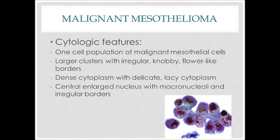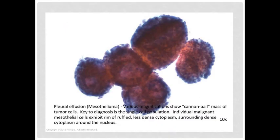Now let's look at their cytomorphology. Malignant mesothelial cells usually have one cell population — large clusters of malignant mesothelial cells. The clusters have an irregular, knobby surface and flower-like borders. The cytoplasm is dense with a lacy appearance. The nucleus of malignant mesothelial cells are enlarged centrally, with macronucleoli and irregular borders. Here is the image of malignant pleural effusion showing single cell population, flower-like borders, large nucleus, and macronucleoli.